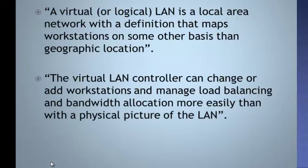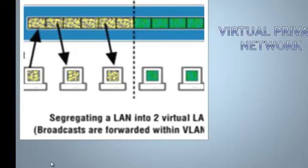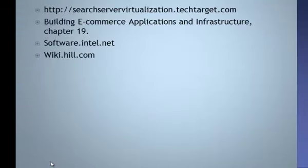VLANs — Virtual Local Area Networks. A virtual LAN is a local area network with a definition that maps workstations on some other basis than geographic location. The virtual LAN controller can change or add workstations and manage load balancing and bandwidth allocation more easily than with the physical picture of a LAN. Here is VLAN 1 and VLAN 2 segregating a LAN into two virtual LANs, broadcasted and forwarded by the VLAN.